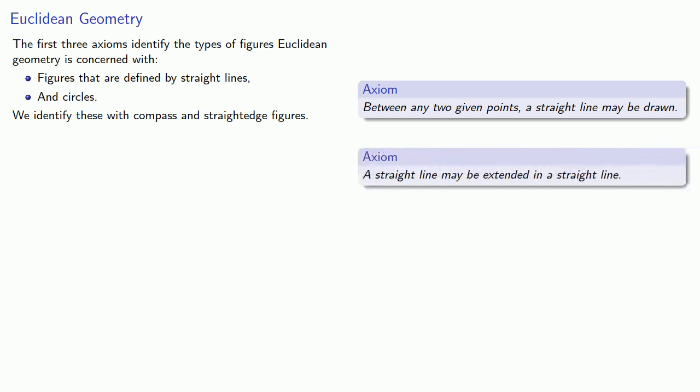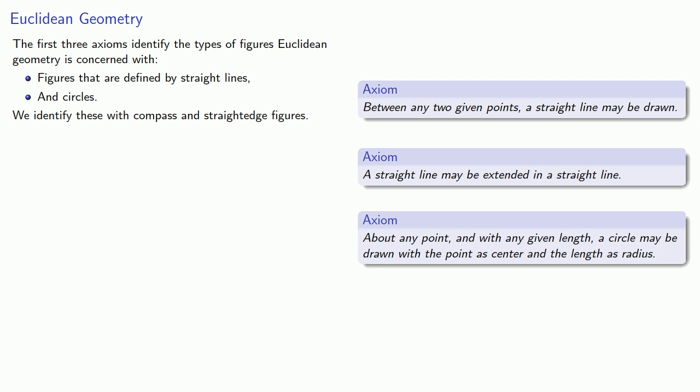But it's important to keep in mind that it's not the tools, but how they're used. So we can use the straight edge to join a line between two points, or extend a straight line in a straight line, or use a compass to draw a circle. But any other use is forbidden.